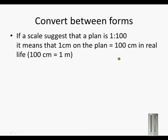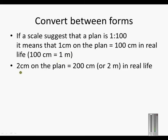If a scale suggests that a plan is 1 to 100, it means that 1 cm on that plan represents 100 cm in real life. Remember that 100 cm is equal to 1 meter. So 2 cm on the plan is equal to 200 cm or 2 meters in real life.